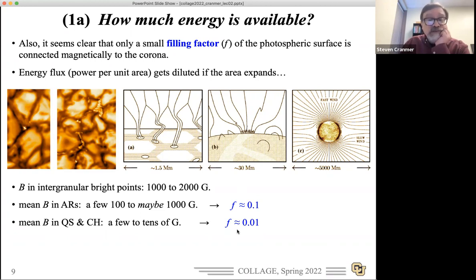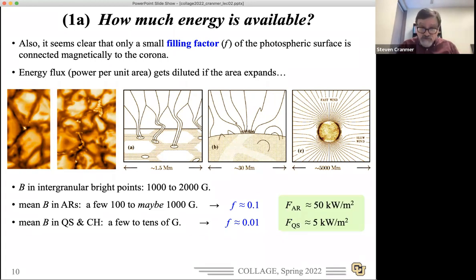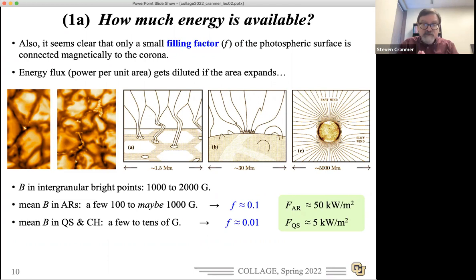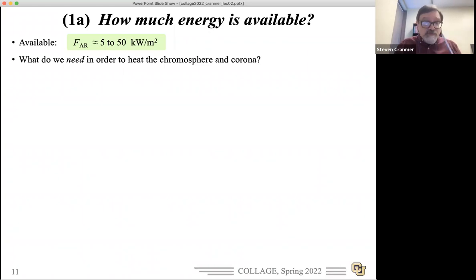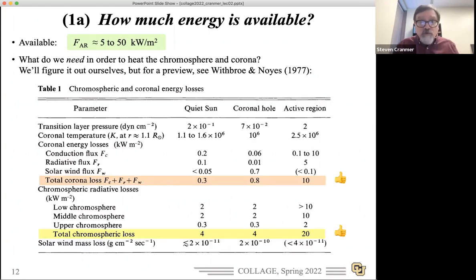The filling factor — mapping from the corona all the way down to a smaller part of the sun — can be something like 10% to 1%, depending on the magnetic activity of the region. That means that the 500 kilowatts per square meter gets reduced by either a factor of 10 to a factor of 100. So what's available per unit area up in the corona is much less. So we've gone all the way from 63,000 to about 5 to 50 kilowatts per meter squared. But we want to compare: is this enough to heat the corona? And the answer is yes.